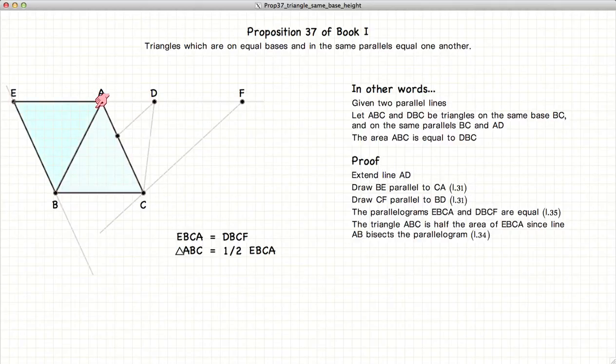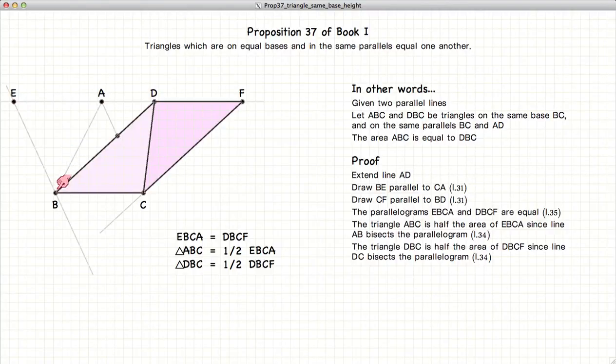Now since our triangle ABC is one half the area of this parallelogram, and the triangle BDC is half the area of the pink parallelogram, since equals are equal to equals,